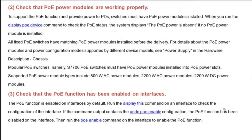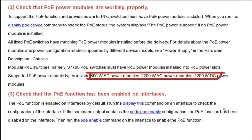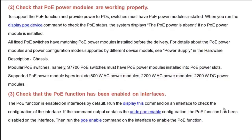Modular PoE switches, namely S7700 PoE switches, must have PoE power modules installed into PoE power slots. Supported PoE power module types include 800W AC power modules, 2200W AC power modules, and 2200W DC power modules. Check that PoE has been enabled on interfaces. PoE is enabled on interfaces by default. Run the display this command on an interface to check its configuration. If the command output contains the undo PoE enable configuration, PoE has been disabled on the interface. Run the PoE enable command on the interface to enable PoE.